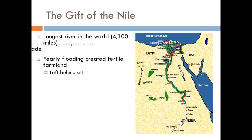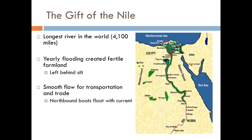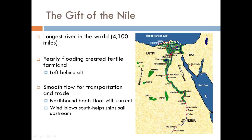Besides farmland, the Nile serves another purpose — it provides a smooth flow for transportation and trade. The Egyptians would trade goods up and down the river. Since the Nile flows from south to north, traveling northbound you can go with the current, so you just sit in a boat and the current takes you. If you want to go south, you're going against the current — but fortunately the winds in this area blow south, meaning they could use sailboats. Regardless of the direction of travel, the Nile could provide that, which was huge for the ancient Egyptians.